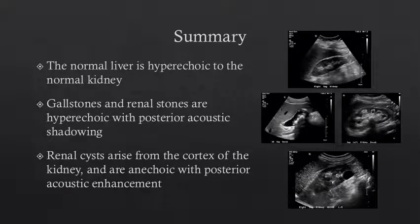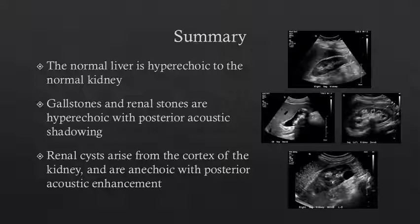In summary, the normal relative echogenicity of the liver to kidney is liver hyperechoic to kidney — in other words, the normal kidney is less bright than the normal liver. Gallstones and renal stones have a similar appearance: both are hyperechoic with posterior acoustic shadowing. Sometimes it can be difficult to differentiate renal sinus fat from a renal calculus, so shadowing is critical and the twinkle artifact using Doppler ultrasound can be helpful. Renal cysts arise from the cortex of the kidney — they should be round, anechoic, and show posterior acoustic enhancement.